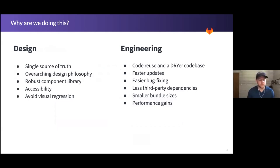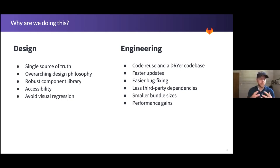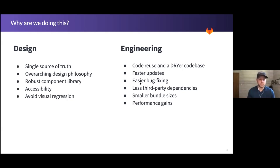From a design standpoint, we've got some really key points. First, it's single source of truth. Right now, having Bootstrap in GitLab and also in GitLab UI means there are two sources of truth, so we're always having competing differences between production and the design system. This will provide and promote a single source of truth from a design standpoint — an overarching design philosophy that allows us to tackle problems in a succinct way, keeping the component library robust and clean.